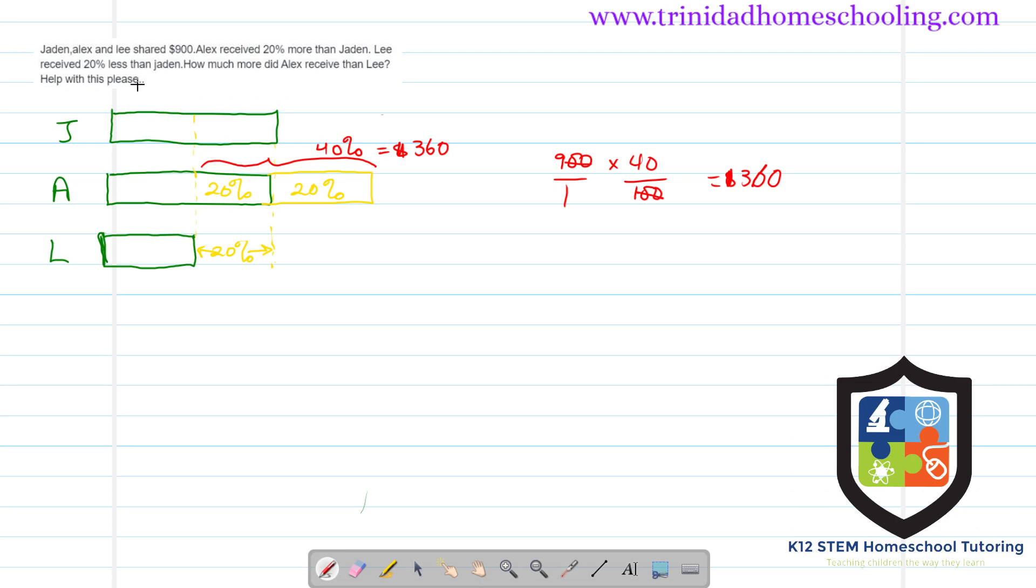So if this here is 20% and this is 20%, this equal portion here of Jayden's is 20% as well, because remember Jayden has 20% more than Lee. Right? So the extras are 20 plus 20 plus 20 plus 20. That's 60%, so our extras are 60%.